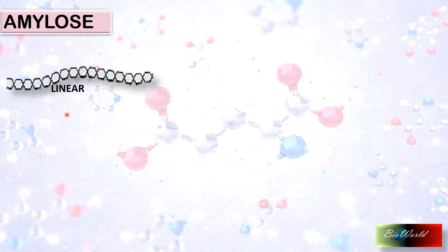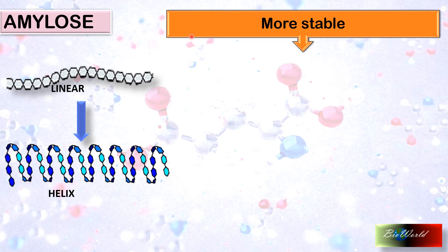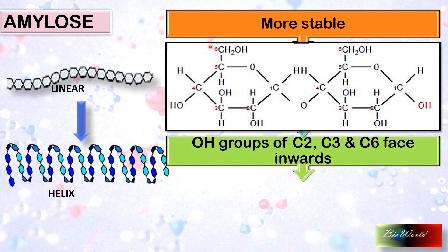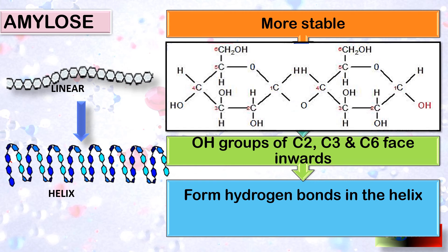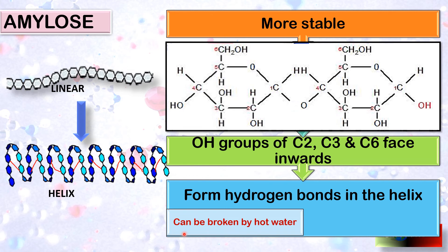Amylose is a long molecule so it tends to twist and form a helix. This helix pattern is more stable for amylose because when it twists, the hydroxyl groups at carbon two, carbon three, and even carbon six will be inside the helix. The advantage of the hydroxyls being inside the helix is they will start to do hydrogen bonding inside. These hydrogen bonds hold the helix together. This is the reason why starch cannot dissolve in water. However, if you mix starch in hot water, starch will dissolve because the hot water breaks the hydrogen bonds.